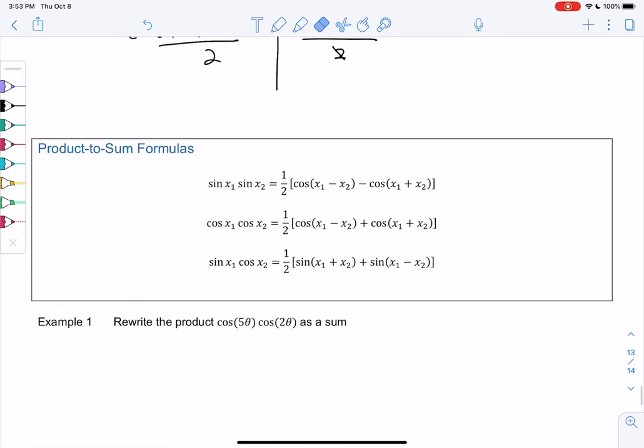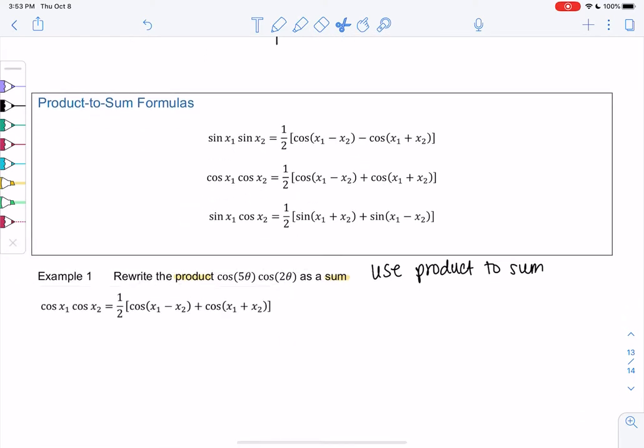In this first example, we have a product and we want a sum, so we use product-to-sum. So we have a product of cosines. I'm going to use the cosine formula, cosine times cosine. You'll see they're all pretty similar. A product of sines turns into a difference of cosines. A product of cosines is a sum of cosines. And then a mix-matched sine and cosine turns into a sum of sines.